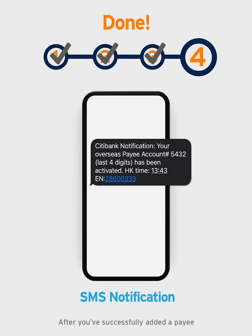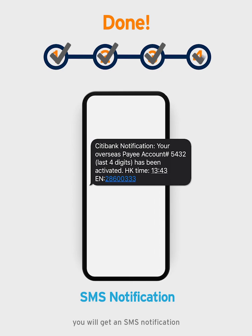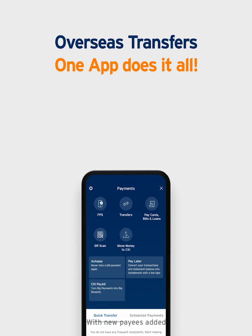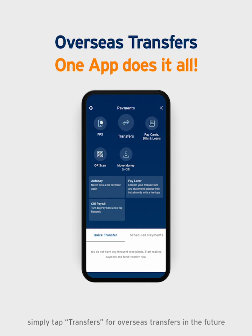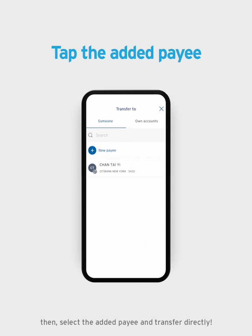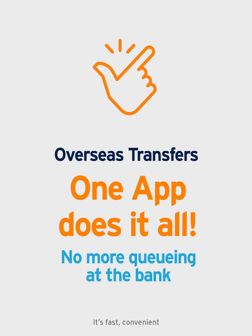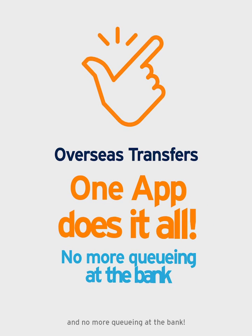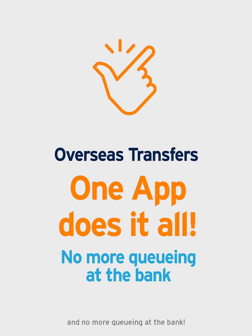After you've successfully added a payee, you will get an SMS notification. With new payees added, simply tap Transfers for overseas transfers in the future, then select the added payee and transfer directly. It's fast, convenient, and no more queuing at the bank.